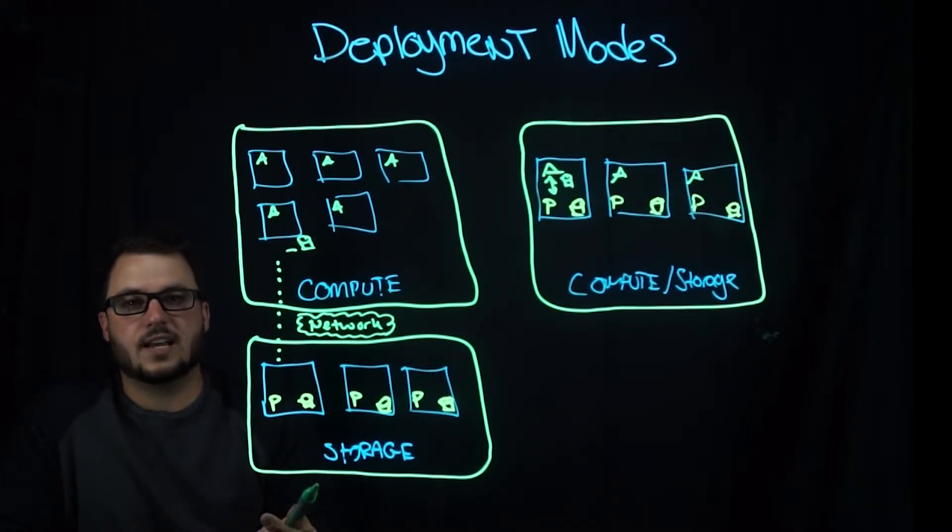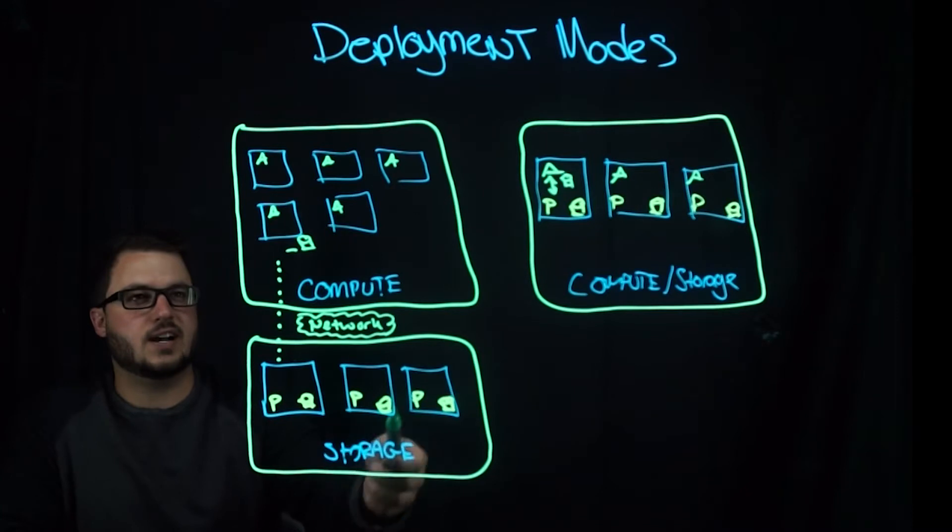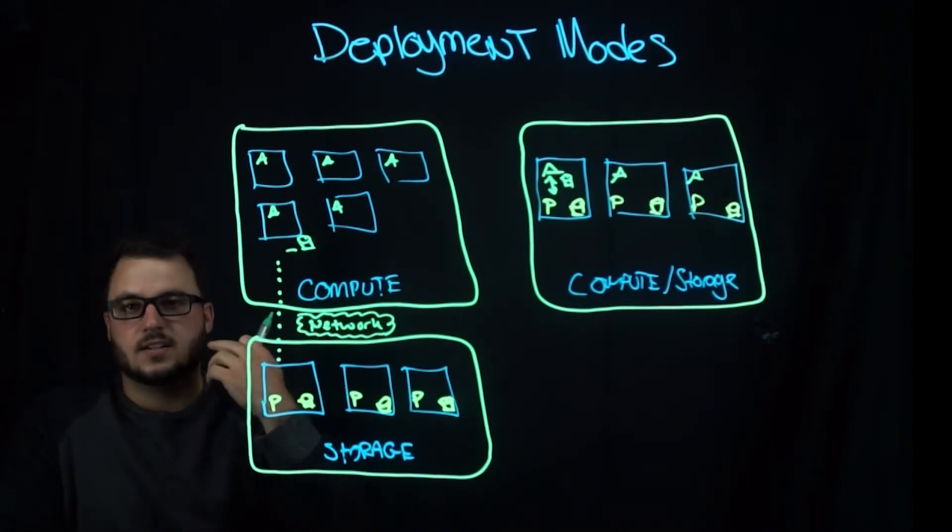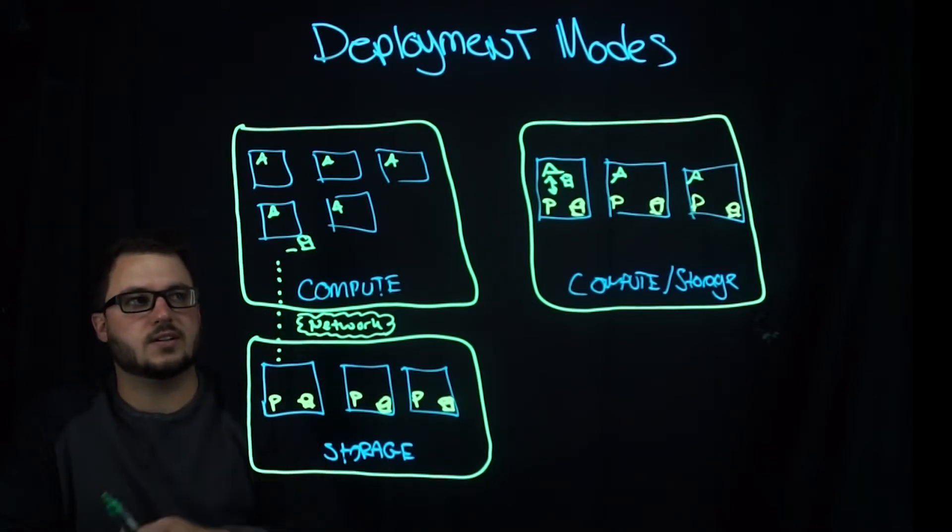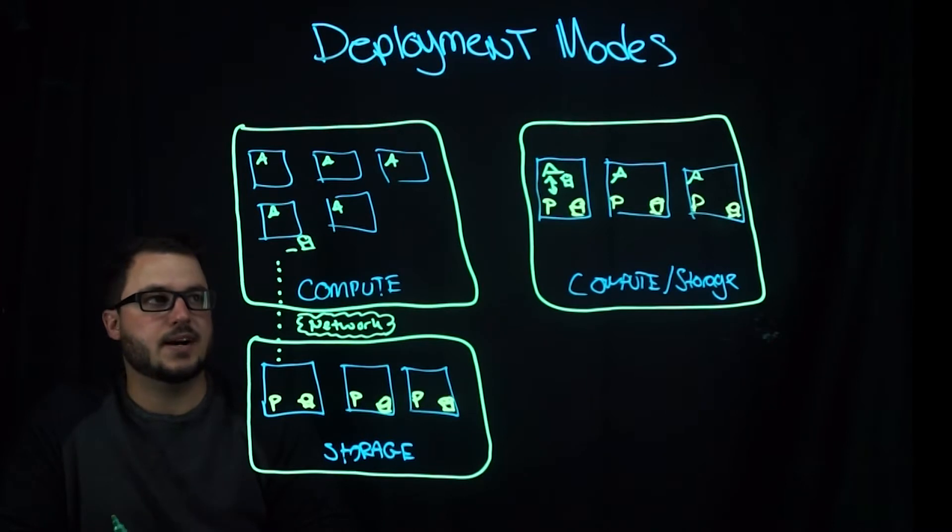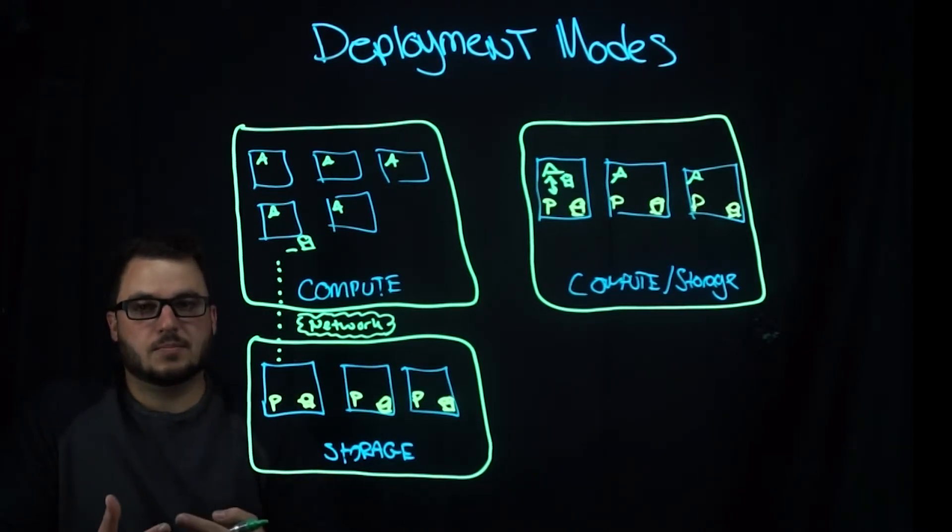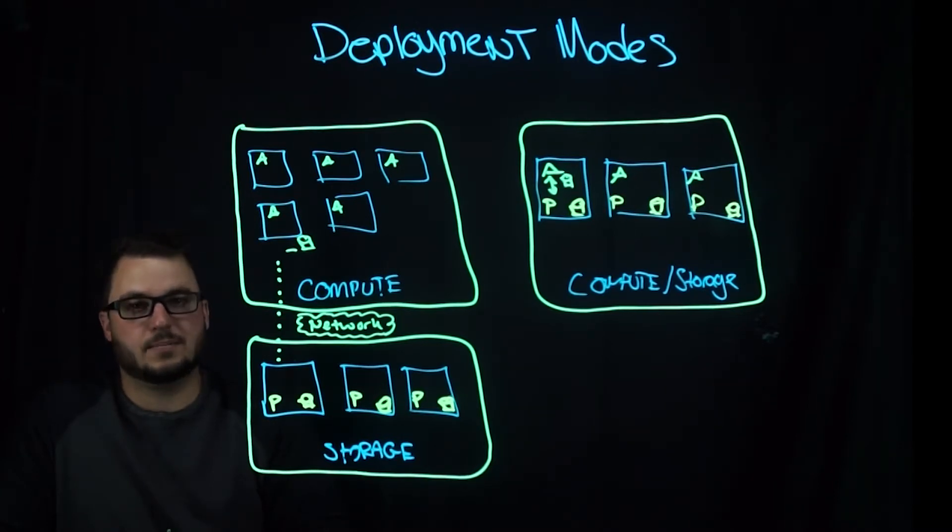In the disaggregated model, you also have kind of double the footprint, in the sense that you're running separate nodes for storage as you are for compute. In the hyperconverged model, you're going to consolidate that down to what needs both your storage data management layer as well as your application layer.